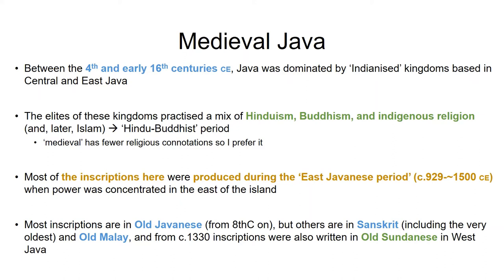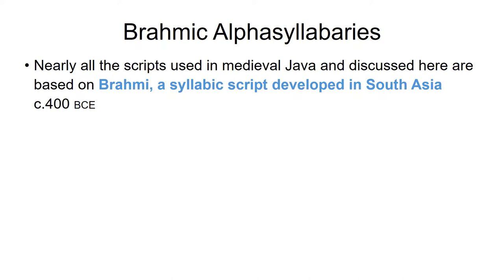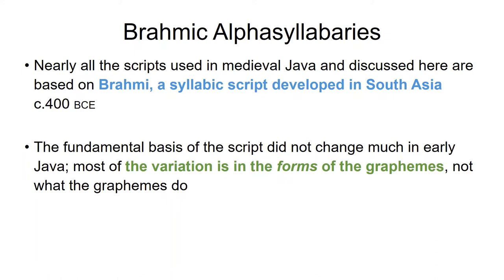All of these scripts are Brahmic alpha-syllabaries, meaning they're based on Brahmi — a syllabic script developed in India around 400 BC, though a lot of Indian people say it's much older than that. The fundamental basis of the script did not change very much in early Java, so we're basically seeing variation in the forms of the graphemes themselves rather than their functions. When I say lots of different scripts, I mean lots of mutually unintelligible variants of the same writing system.